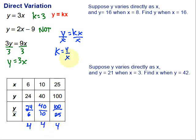So, because, remember that's my k, it's the same all throughout, this is an example of a direct variation.